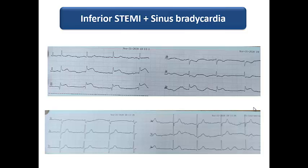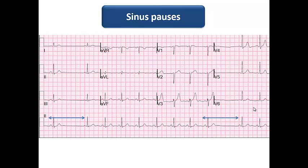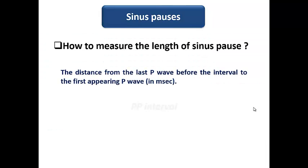Another type of sinus node dysfunction in myocardial ischemia is sinus pause. Affecting the SA node's blood supply can lead to intermittent pauses in SA node activity. The length of a sinus pause is measured as the distance from the last P wave before the pause to the first appearing P wave, in milliseconds — a PP interval. Sinus pauses in myocardial ischemia are dangerous because they may degenerate to bradyasystole if the occlusion of the culprit vessel persists.